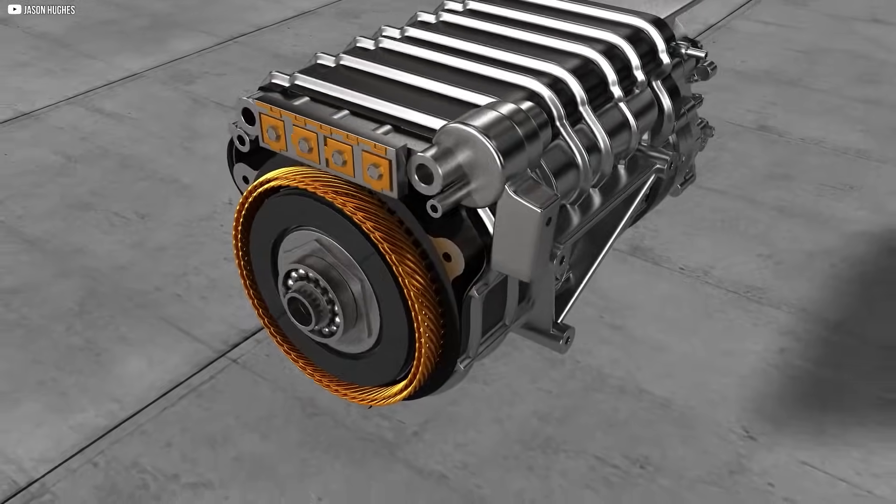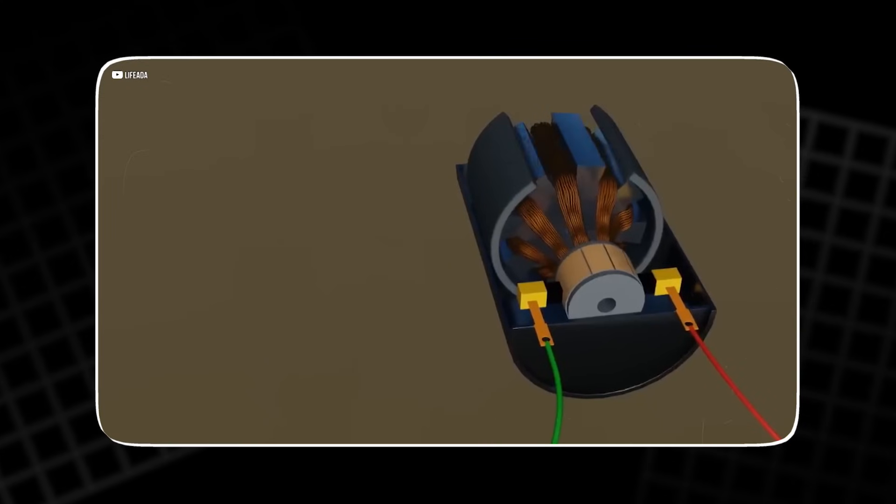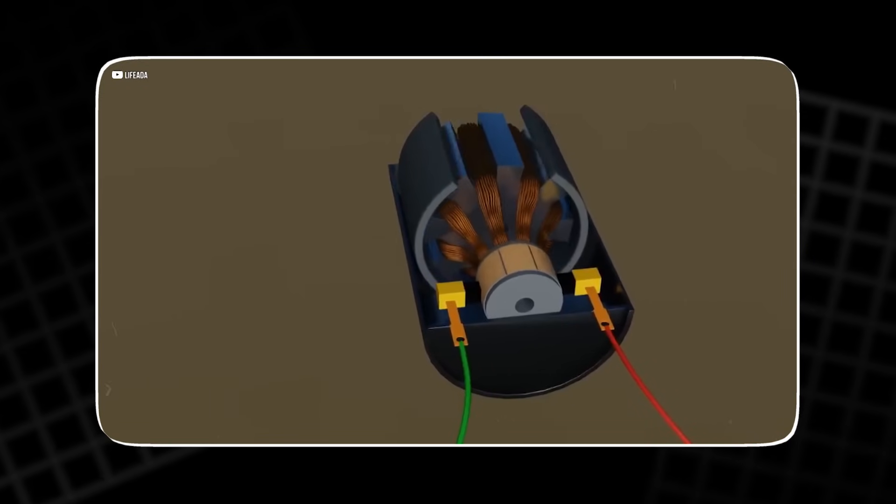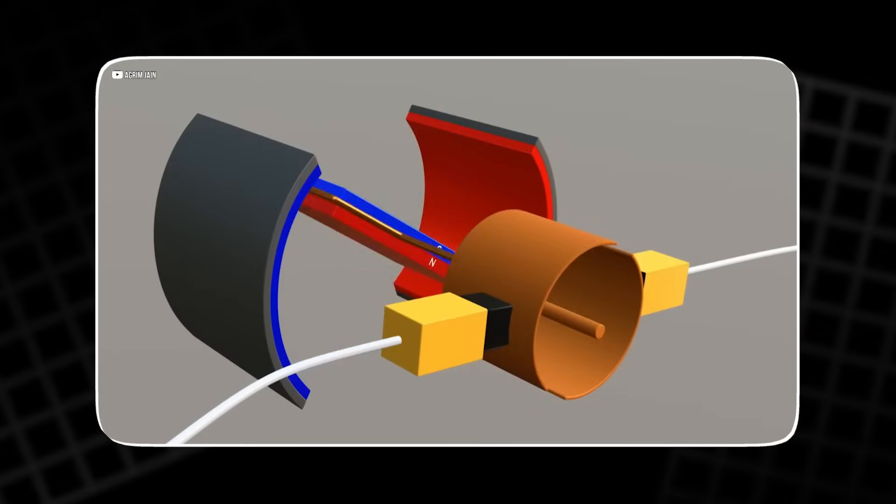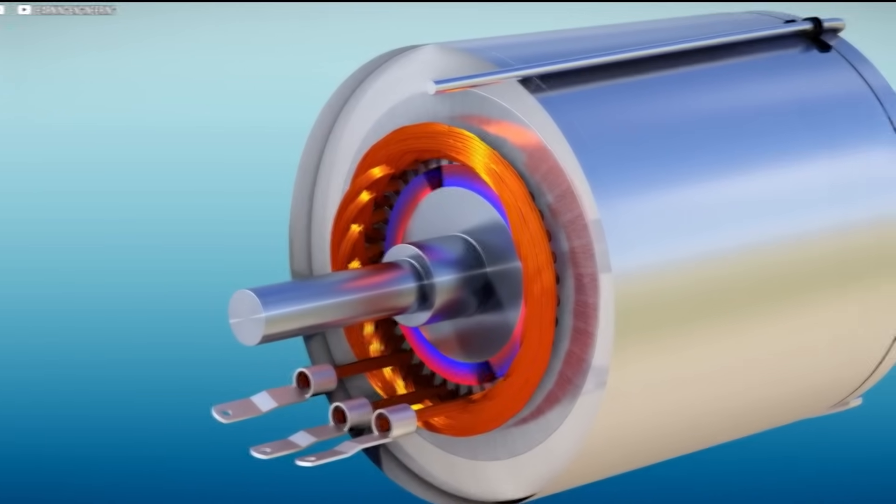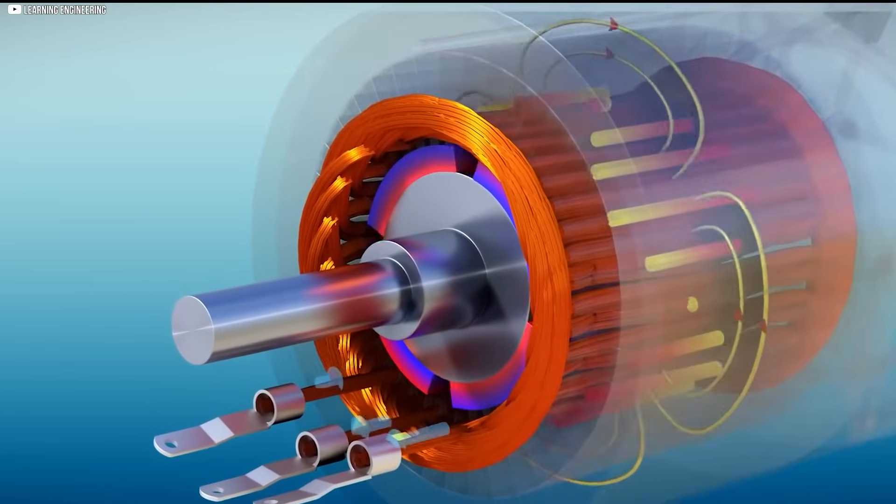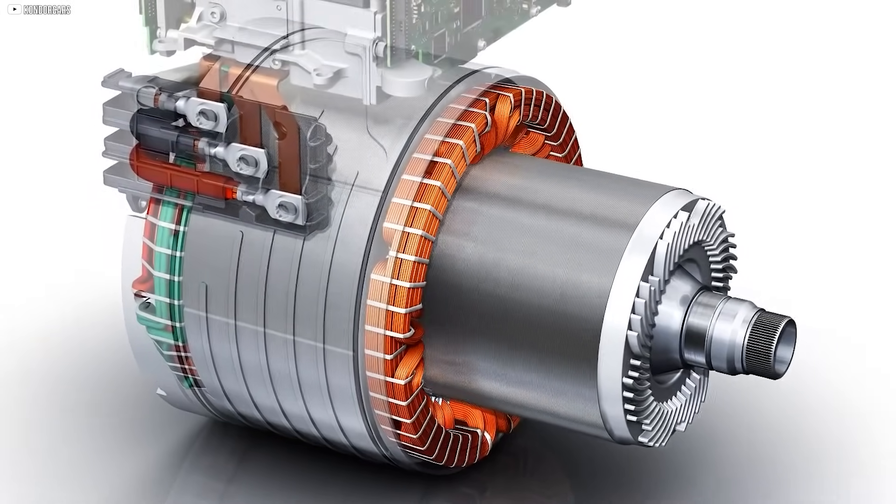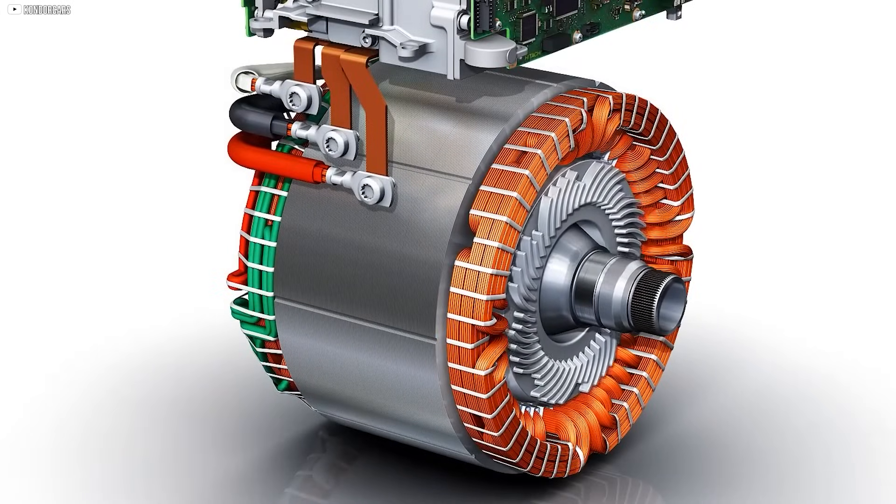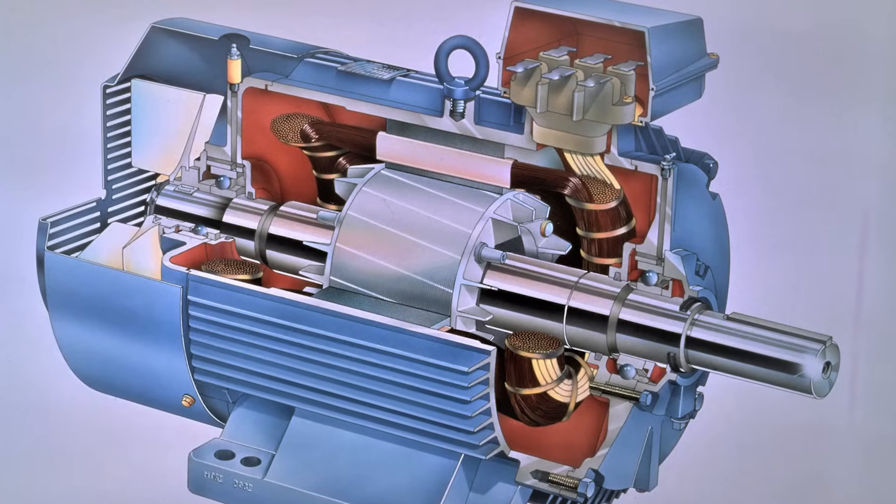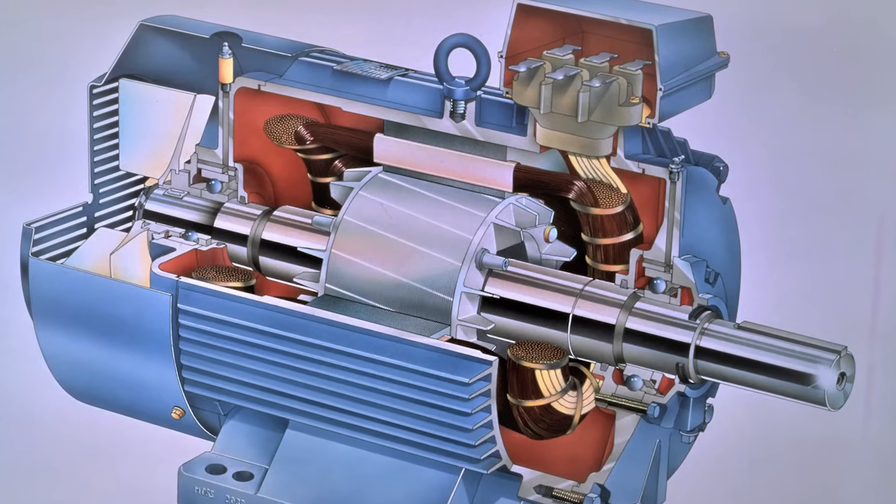At its core, the induction motor works by sending alternating current through coils wrapped around the outside of the motor. This creates a rotating magnetic field. That field would then induce an electric current in the rotor, the spinning part inside. The two magnetic fields interacted, and the rotor turned. It sounds straightforward, and for the most part, it was.